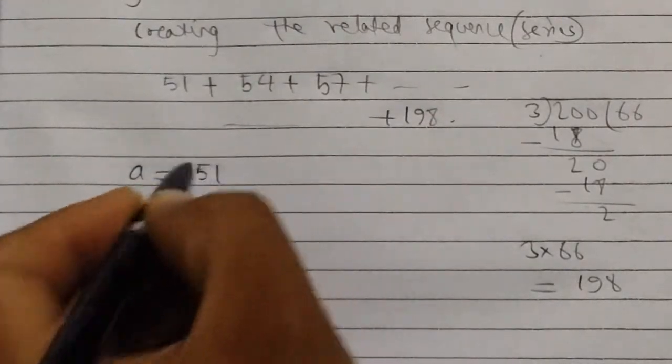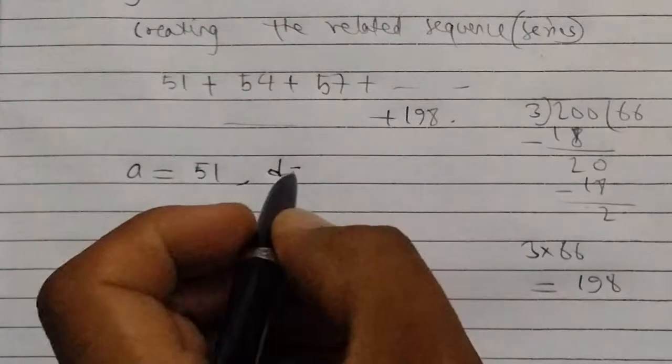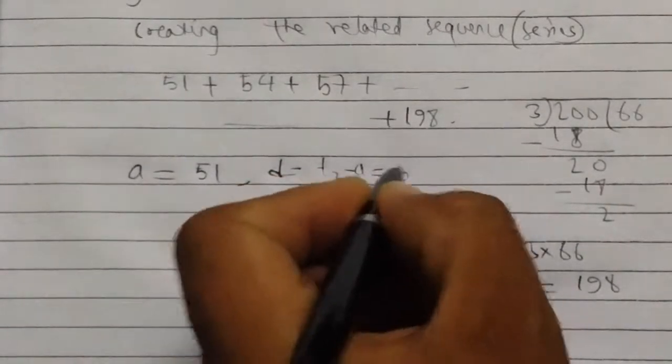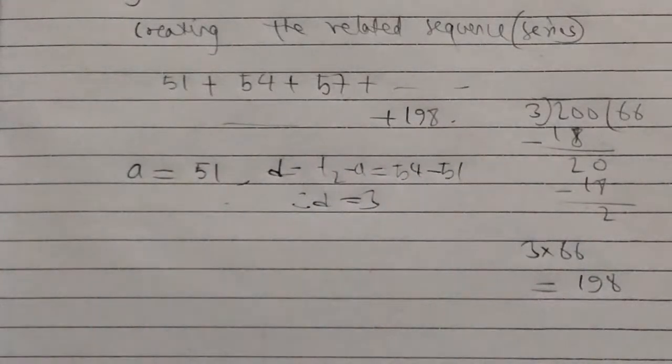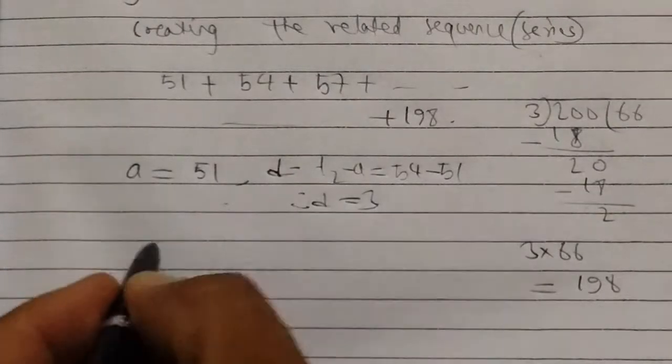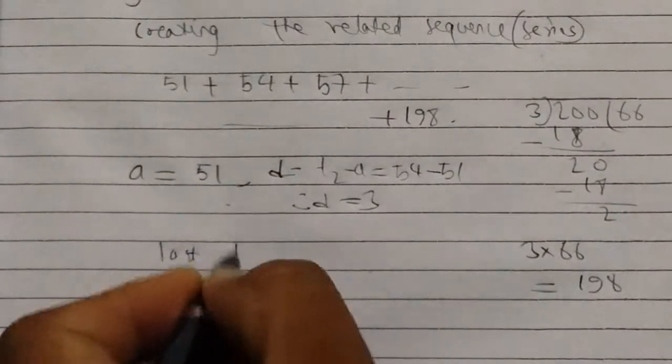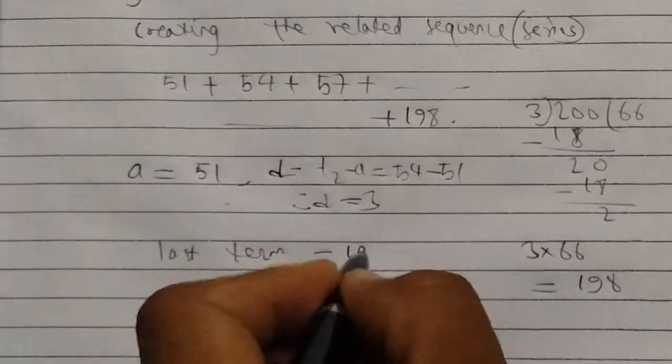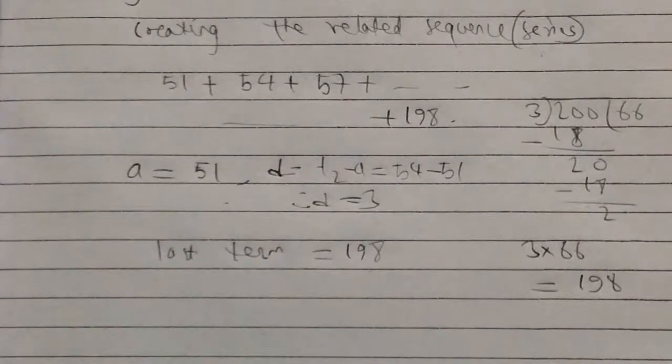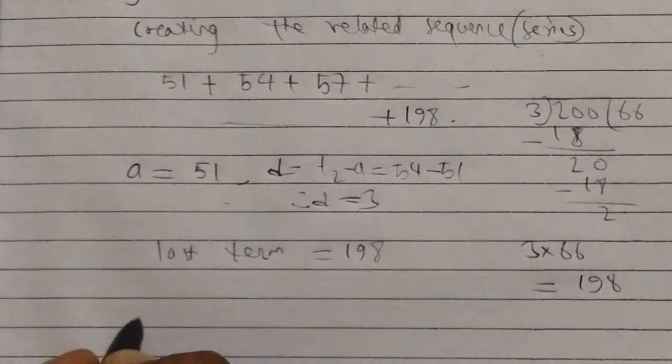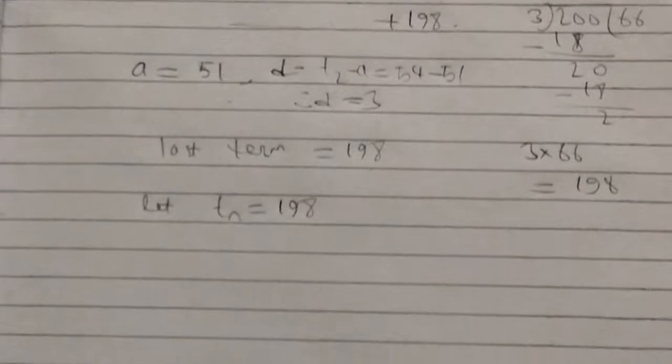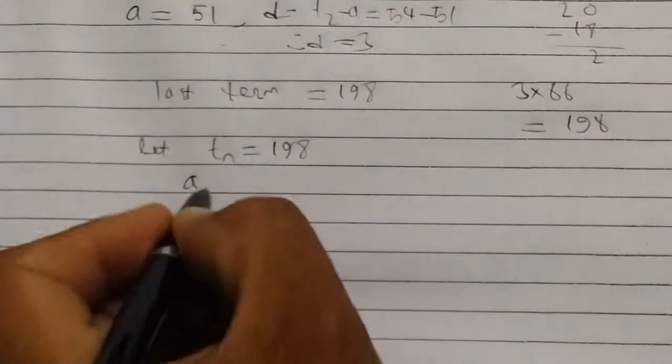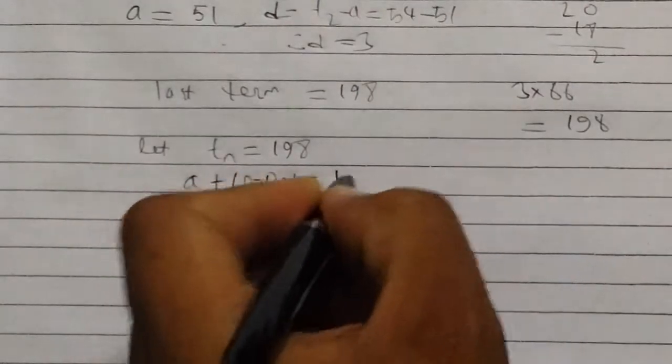First term a is equal to 51. The common difference d is equal to: second term 54 minus first term 51 is 3. Therefore difference is 3. Now we need to find the number of terms. Last term is equal to 198. Let tn equal to 198. Now we will use the formula.